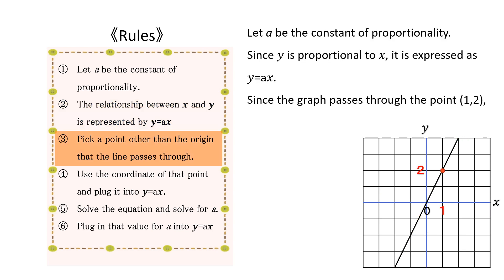Next, pick a point other than the origin that the line passes through. For this graph, we can choose the point 1, 2.